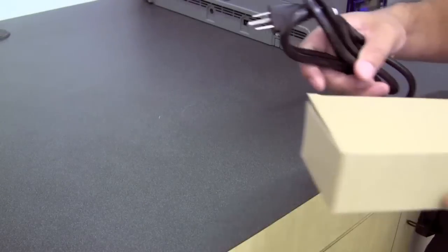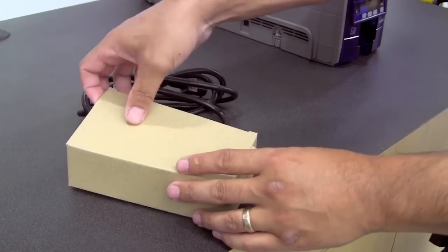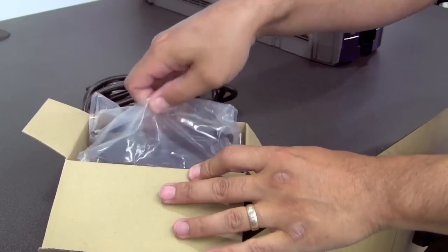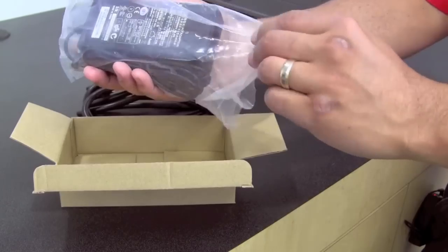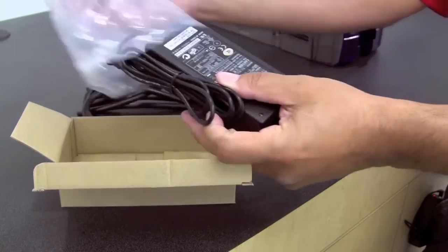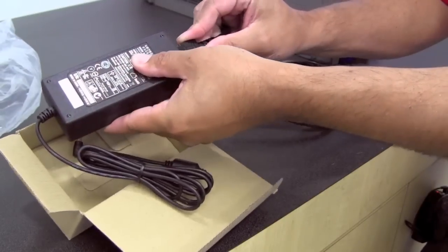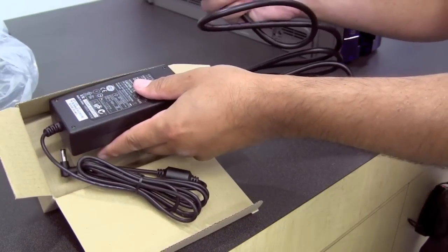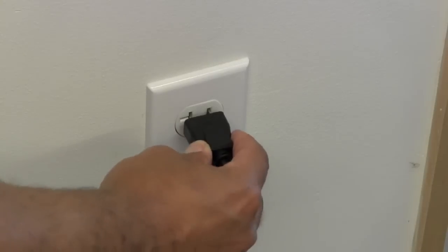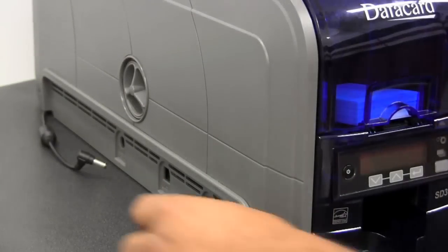Next step is to plug in the printer. Unpack the power supply, take your power cord and plug into the power supply, and then take your plug and plug it into the wall. Next step is to plug in the printer and power it on.